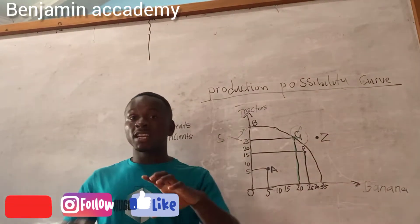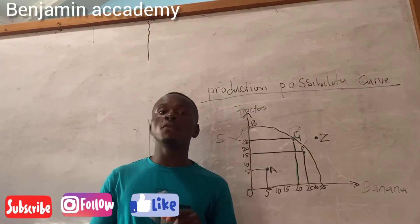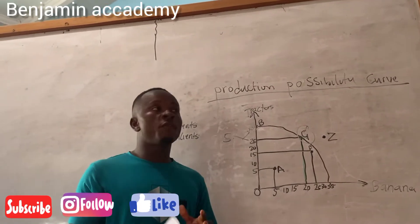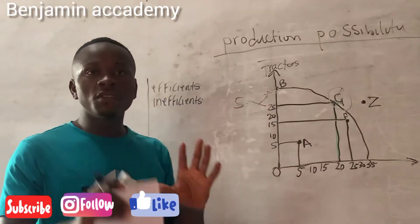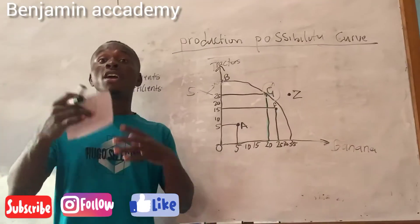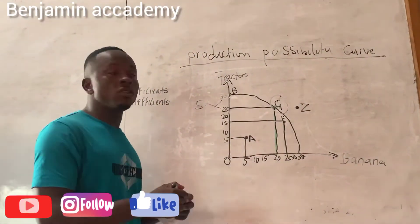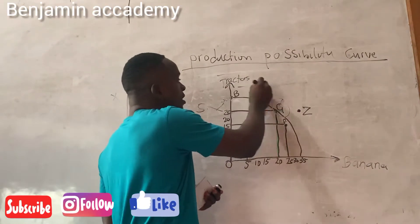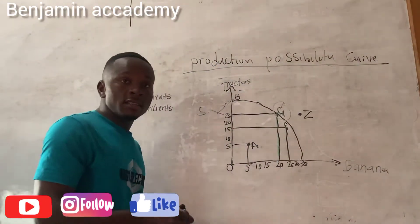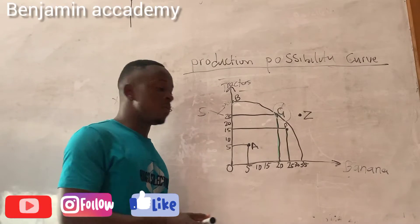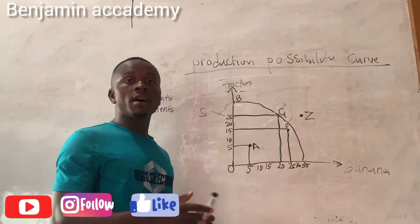In video 1 we explained the production possibility scale, video 2 we solved, video 3 we explained, and video 4 we are going to solve. In work tutorial video 4, it talks about a country producing two goods: tractors and bananas.